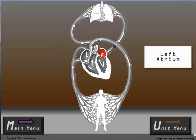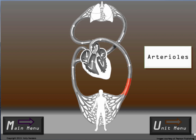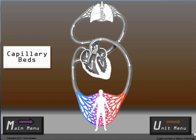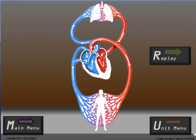Systemic circulation: Left atrium, through the bicuspid valve, left ventricle, aortic valve, aorta, arteries, arterioles, systemic capillary beds, venules, veins, vena cava, and now blood is brought back to the heart.